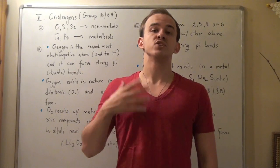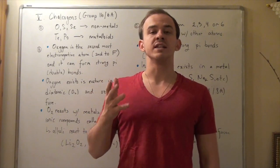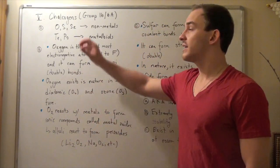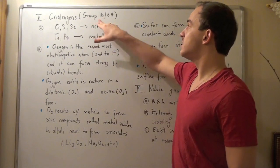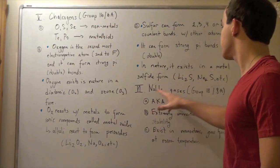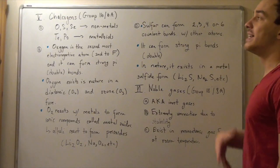In this lecture, we're going to talk about two more groups, or families, found on our periodic table, known as the Chalcogens, or group 16, 6A, and the Noble Gas group, or group 18 or 8A.